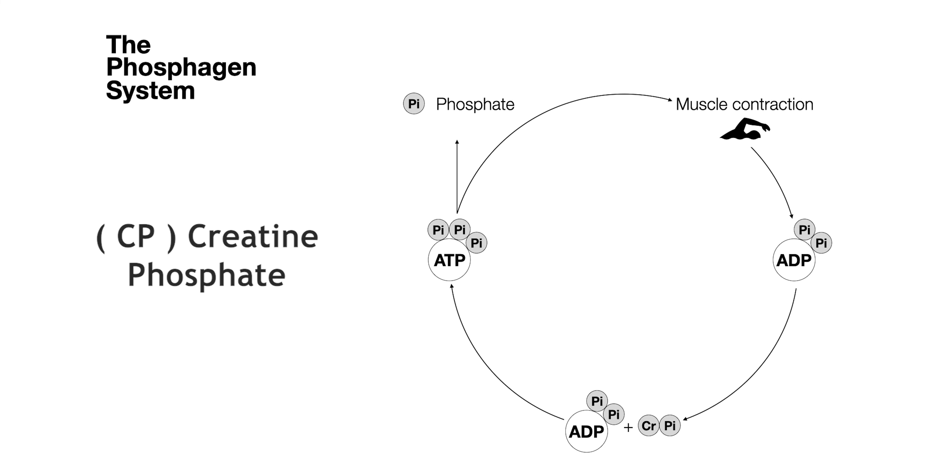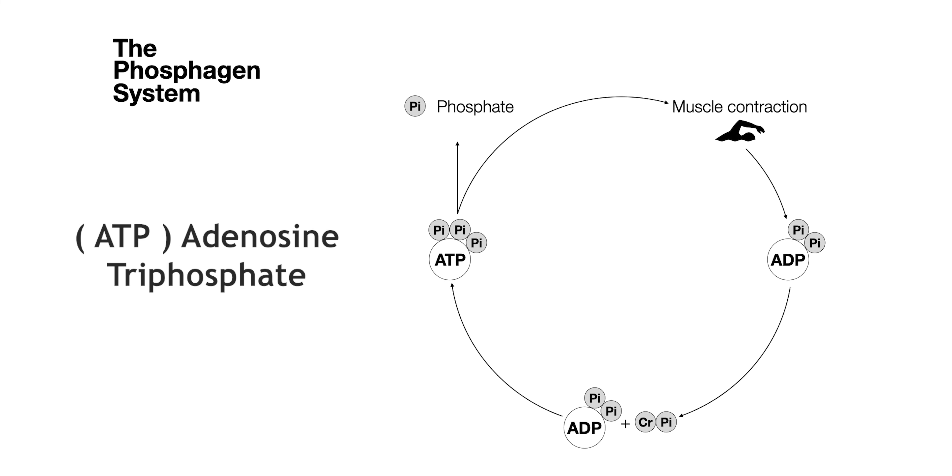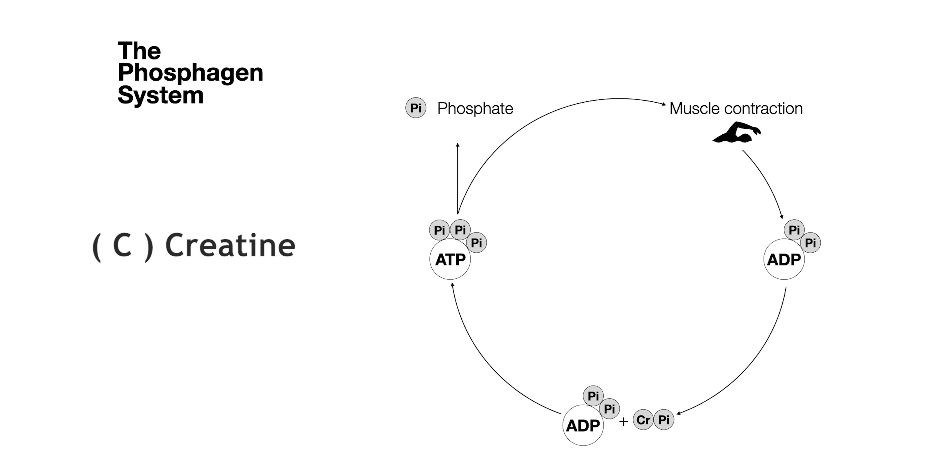The reaction is as follows: ADP plus CP, catalyzed by creatine kinase, gives us ATP plus C. Here ADP stands for adenosine diphosphate, CP stands for creatine phosphate, ATP stands for adenosine triphosphate, and C stands for creatine. Since the amount of creatine in the muscle is limited, the ATP produced by the phosphogen system is also limited. The ATP production rate is faster than any other system, but the total number of ATPs produced is on the lower side.